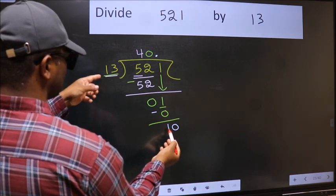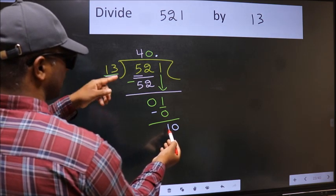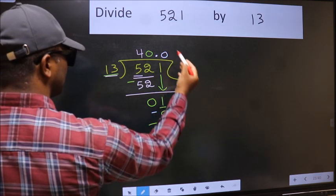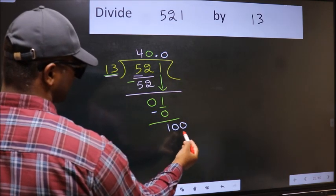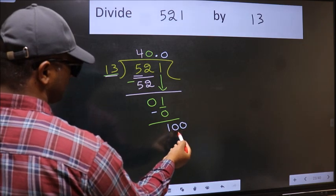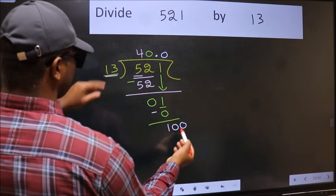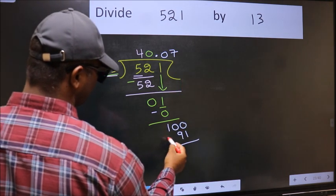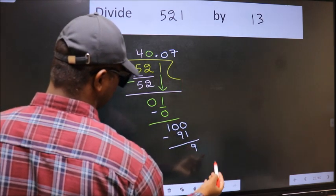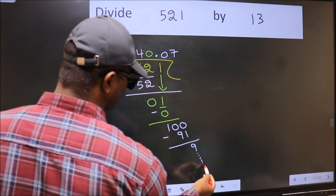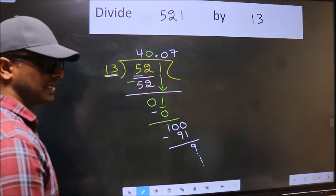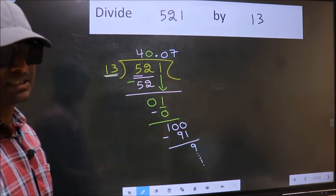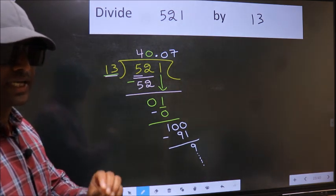10 is still smaller than 13, and we already have the decimal. So put 0 here to get 100. A number close to 100 in the 13 table is 13 sevens 91. Now we subtract and get 9, and you continue the division. Did you understand where the mistake happens? You should not do that mistake.